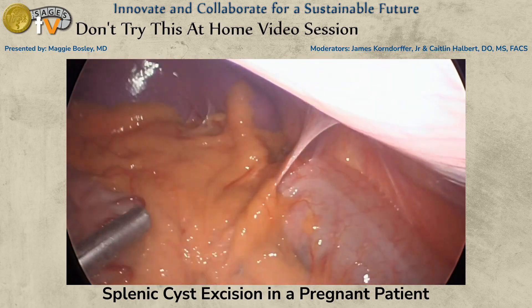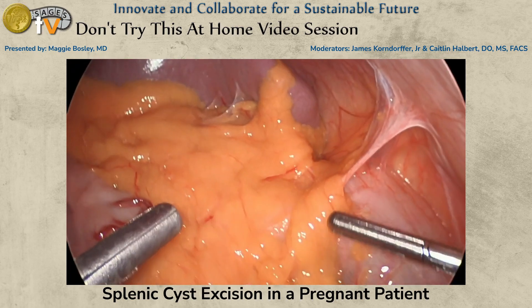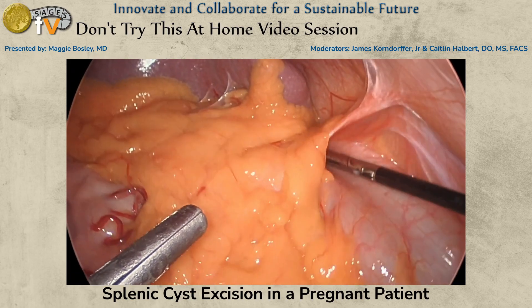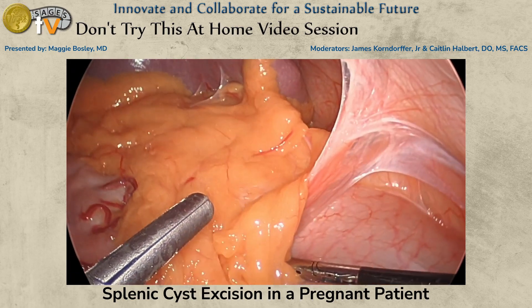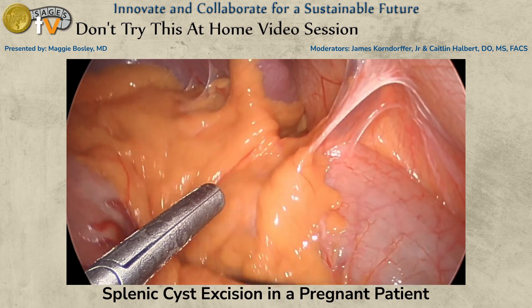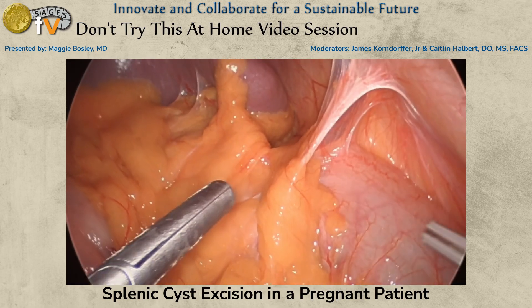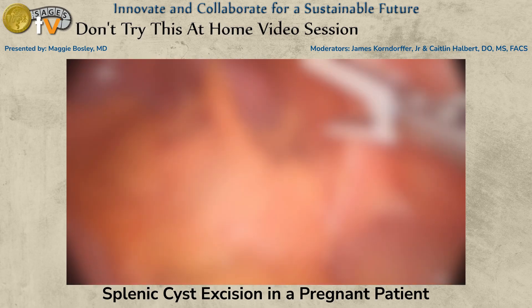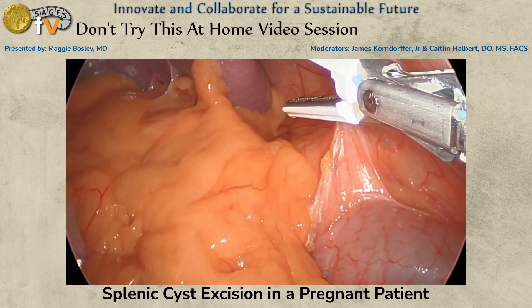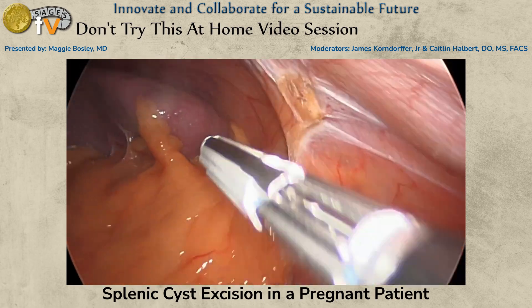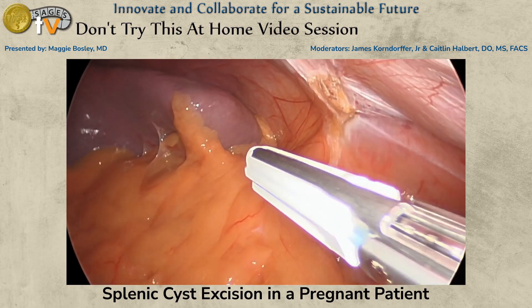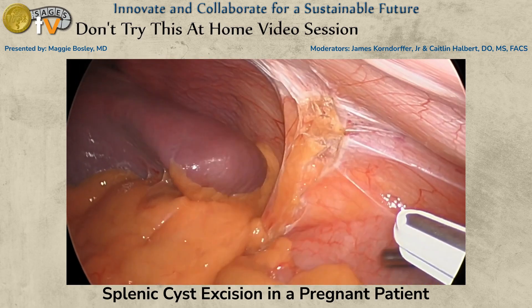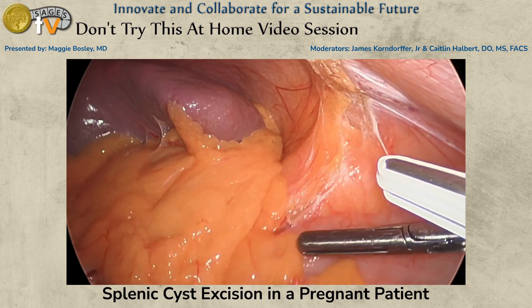We took her to the operating room, positioned her in a hemilateral position, and placed four ports superior to her pregnant uterus. We then began by mobilizing the splenic flexure.